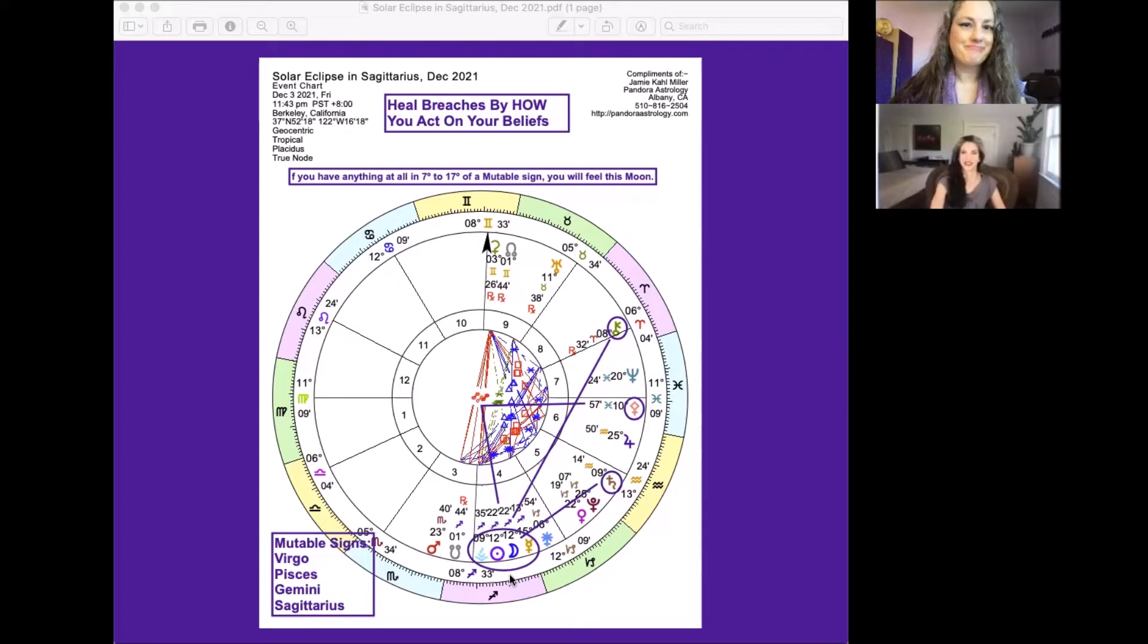Thank you, Jamie. Yeah, so it is a releasing eclipse because we have the south node there by the sun and moon, and we are releasing the themes of Sagittarius, which can be our opinions, our beliefs, maybe some strongly held beliefs, and we encounter some new information that helps us to revise them.